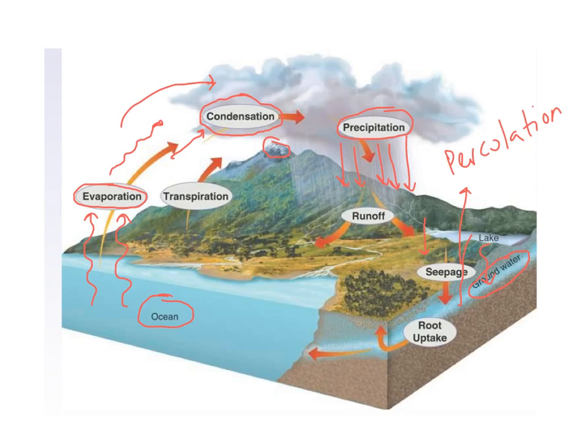The last thing is transpiration — another way that water goes back into the atmosphere. Transpiration is water escaping through the leaves of trees or plants and going back into the atmosphere. Most of the water that plants take up gets released right back into the atmosphere — they pump it up to their leaves and then it escapes and goes back into the air. Thank you very much for listening. Talk to you next time.